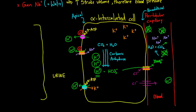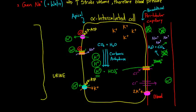This brings up the last point: in all cells, including the alpha intercalated cell, we have sodium-potassium pumps on the basolateral surface that maintain the sodium-potassium gradient. In the alpha intercalated cell it's no different — the pump drives two potassiums in and forces three sodiums out. This also takes energy.